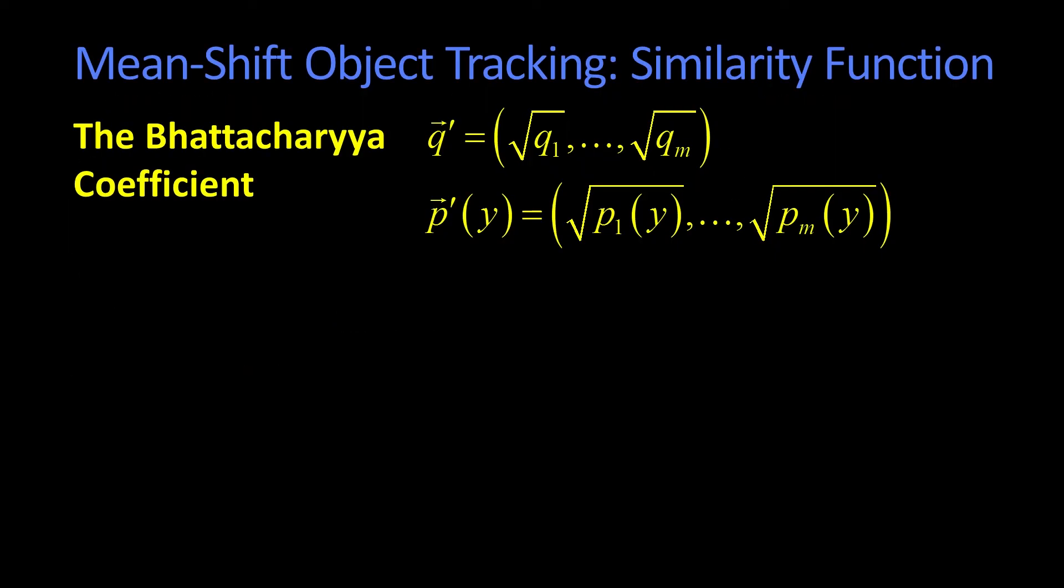The one that was used with respect to mean shift tracking is referred to as the Bhattacharyya coefficient. The Bhattacharyya coefficient comes from something related to the Bhattacharyya distance. It's simply a way of comparing distributions.